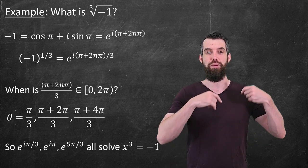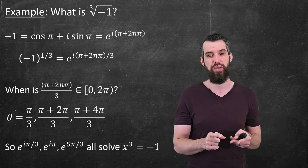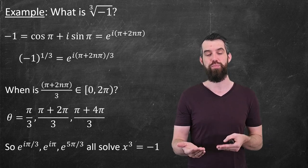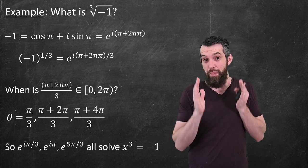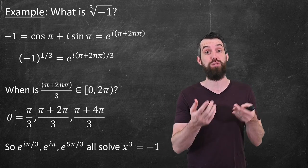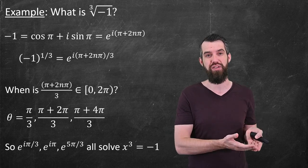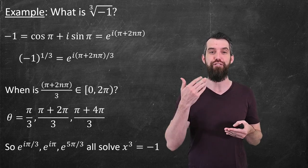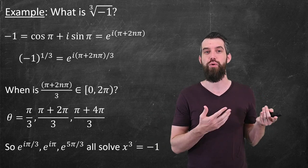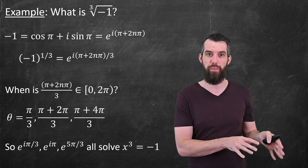Three different angles — which makes sense since we expected three solutions by the fundamental theorem of algebra. Writing them more cleanly: the first is e^(iπ/3); the second is e^(iπ) — and as we saw above, e^(iπ) = −1, which is exactly what we found previously; and the third is e^(i5π/3). All three of these solve x³ = −1. Three roots to a degree-three polynomial.